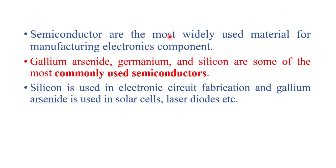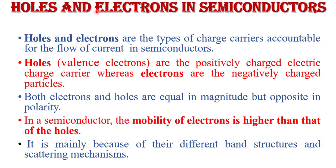Semiconductors are the most widely used materials for manufacturing electronic components. Gallium arsenide, germanium, and silicon are commonly used semiconductor materials. Silicon is used in electronic circuit fabrication, whereas gallium arsenide is used in solar cells, laser diodes, and similar applications.